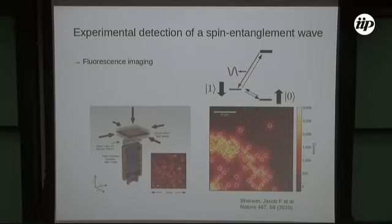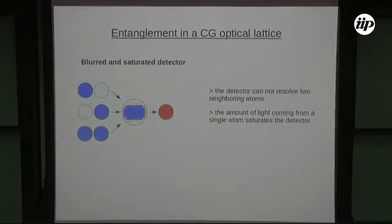We did a coarse-grained approach where we start from the simplest case when our detector cannot resolve two neighboring atoms. They cannot resolve if the light comes from the left or the right, and the amount of light from a single atom already saturates the detector. If these two neighboring atoms are emitting light, all these three situations, I have this blurred detection, and we can relate this to our coarse-grained spin in a coarse-grained level.